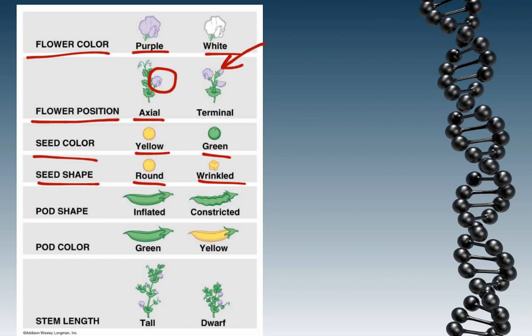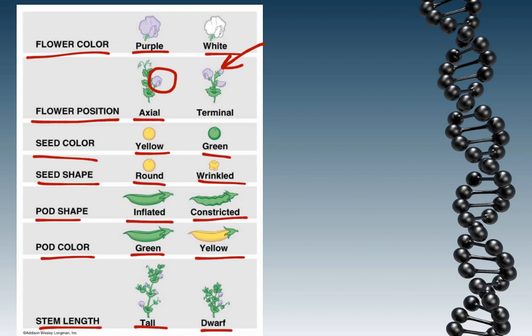He looked at the shape of the pods, which are what actually contain the seeds or the peas. He noticed that some of them were inflated, or what we call smooth — meaning they were very large and smooth with no wrinkles — and some of them were constricted or wrinkled. He also looked at the color of the pods: some pea plants produced green pods and some produced yellow pods. And he looked at the actual height of the plants, or the length of the stem — some were tall and some were short, which he called dwarf.